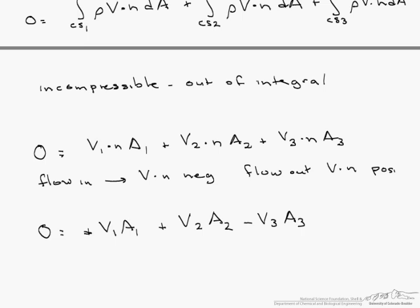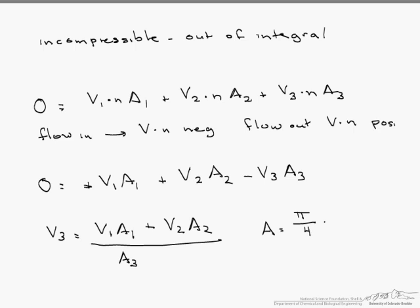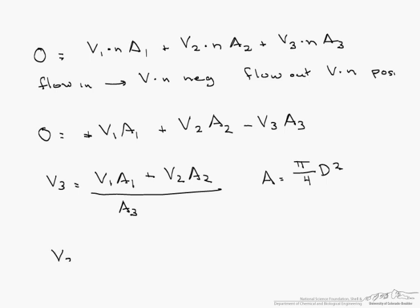So what we are looking for is that v3. So we can rewrite this as v3 equals v1 A1 plus v2 A2 all divided by A3. Knowing that the area, it is the cross sectional area, and the cross sectional area of a pipe is pi over 4 d squared. When we put in our values, what we find is v3 equals 1.07 meters per second.